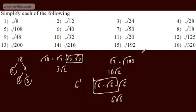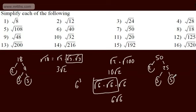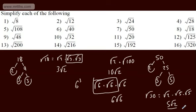OK, so that's simplifying. Let's do one more — root 50. We can write 50, divide by 2 to get 25, divide by 5 and divide by 5. So we've got root 50 equal to root 2 multiplied by root 5 multiplied by root 5, which gives us 5 root 2.